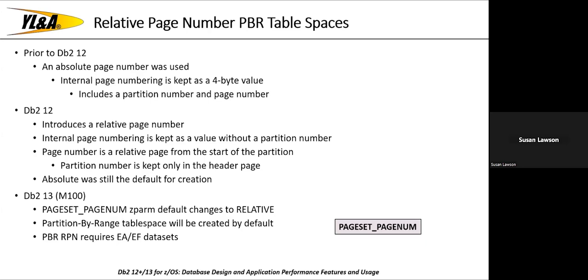In version 13, relative page numbering becomes the default. There's a ZPARM — the page set page num ZPARM — that will be relative by default. If you're not already defining your datasets with extended addressability enabled, you need to be, because partition-by-range with relative page numbering requires extended addressability on your datasets.